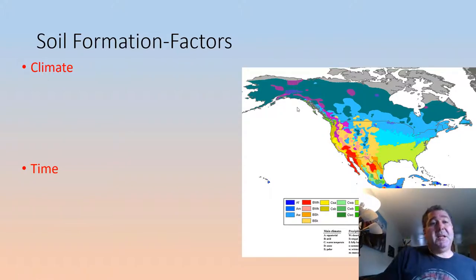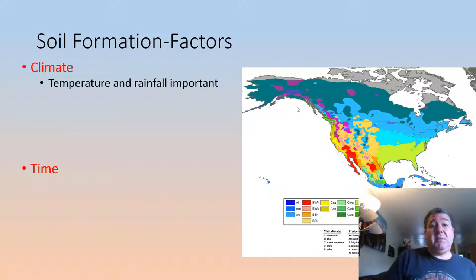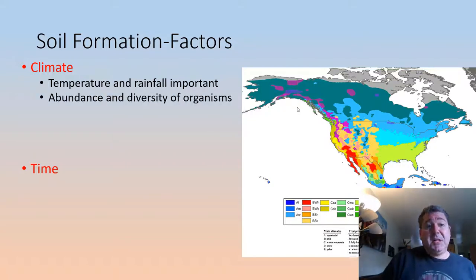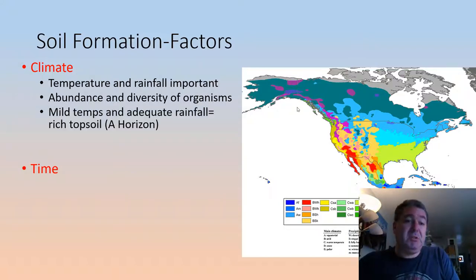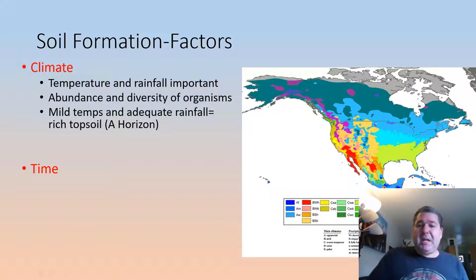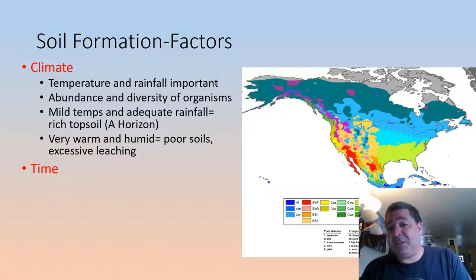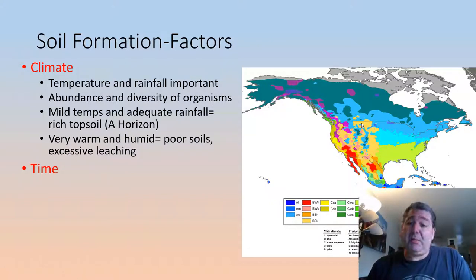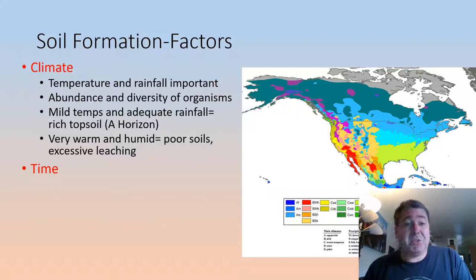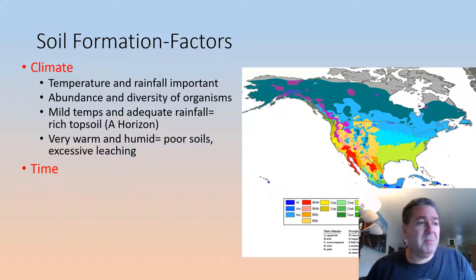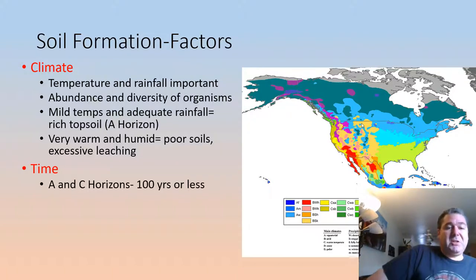Other factors include climate — temperature and rainfall are important — and the abundance and diversity of organisms, which help recycle nutrients. With mild temperatures and adequate rainfall, you get a rich topsoil horizon like much of the Midwest United States. In very warm and very humid tropical conditions, you get excessively leached soils where we find bauxite, our ore for aluminum, as well as kaolinite and other clays.